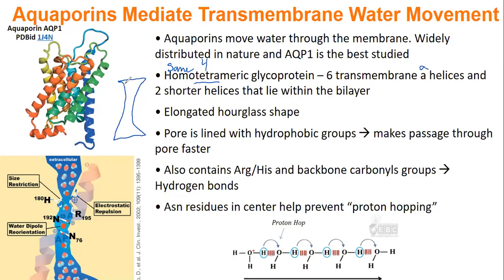You might think that in the center of a channel that transports water, you'd want hydrophilic groups to interact with the water. But the idea is that in the center of the pore, we have hydrophobic groups to move water faster through. Water does not want to interact with hydrophobic groups because it cannot hydrogen bond to them, so water wants to escape those groups faster, which means transportation through the pore is actually sped up.